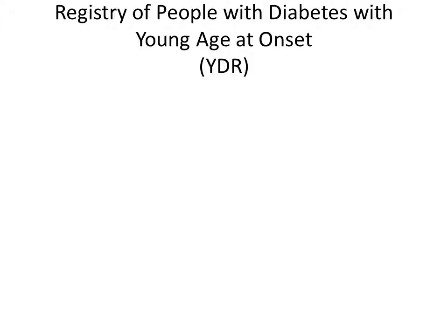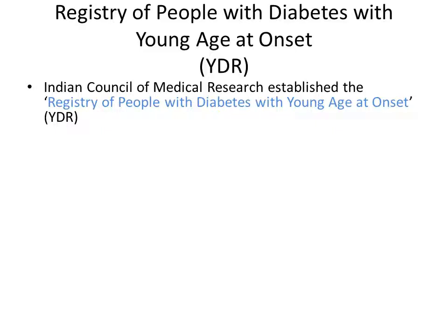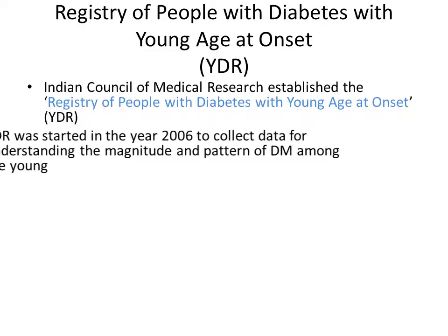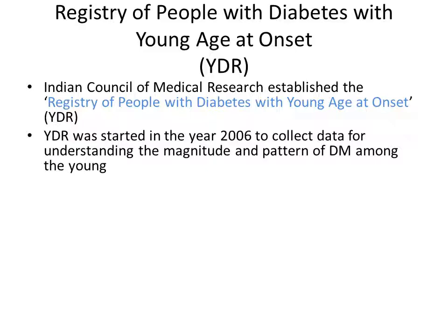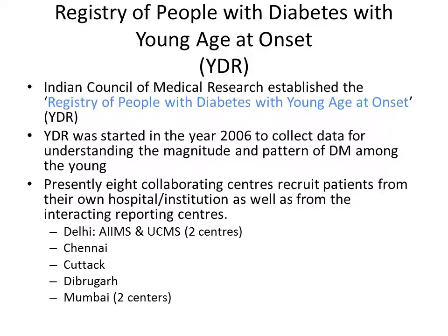The registry is known as the Registry of People with Diabetes with Young Age at Onset, or YDR in short. It is a database wherein an effort is made to record all cases fitting the description — people diagnosed with diabetes at a young age. YDR was established by the Indian Council of Medical Research in 2006 to understand the magnitude and pattern of diabetes mellitus among the young in the country. There are eight collaborating centers: two in Delhi, one each in Chennai, Cuttack, Dibrugarh, one in Chandigarh, and two in Mumbai.